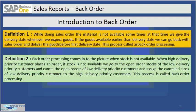Definition number two: backorder processing comes into picture when the stock is not available. That means when there is a customer order and you check your inventory, you find that the items that have been ordered are not presently available within the stock.